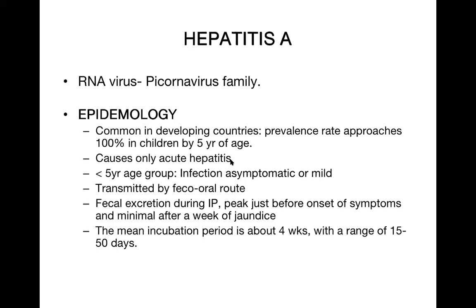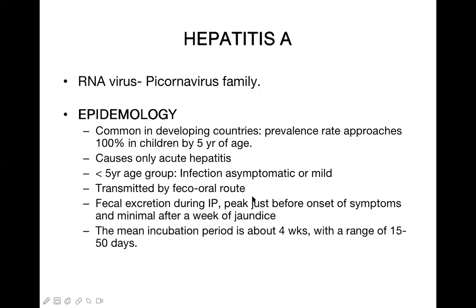Hepatitis A causes only acute hepatitis — there is no carrier stage and no chronic stage. Many infections are asymptomatic or subclinical. It is transmitted by the fecal-oral route via contaminated food and water. Fecal excretion occurs during the incubation period, peaks just before the onset of symptoms, and is minimal after one week of jaundice.